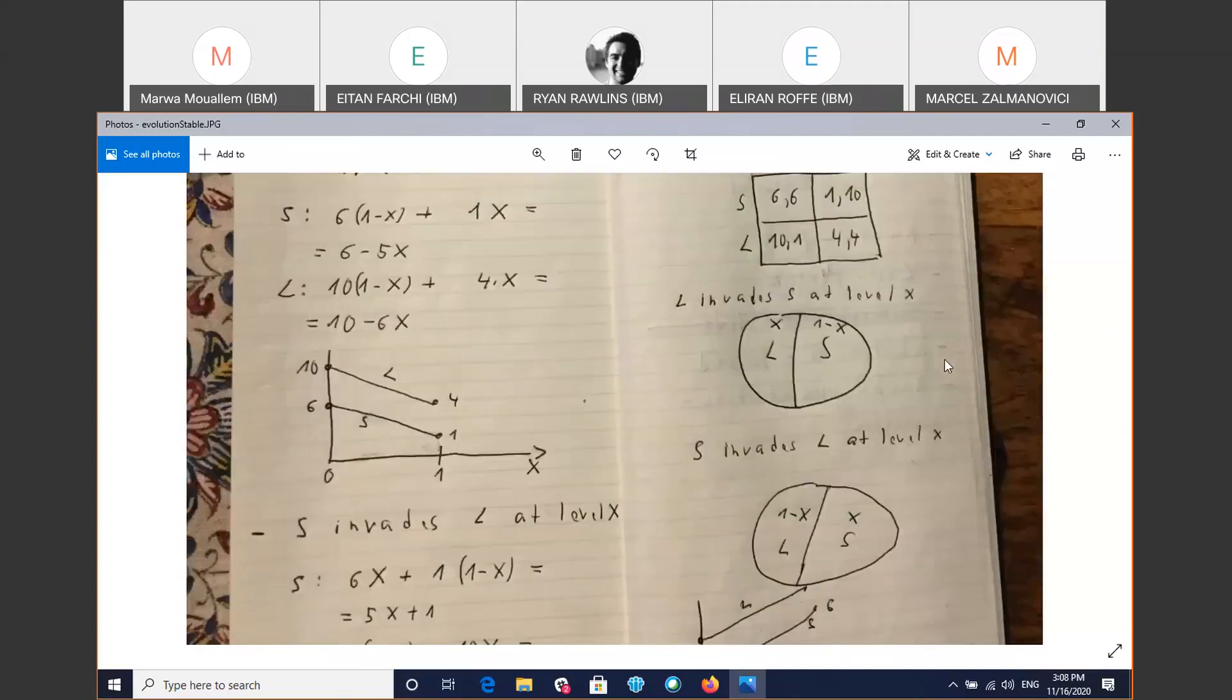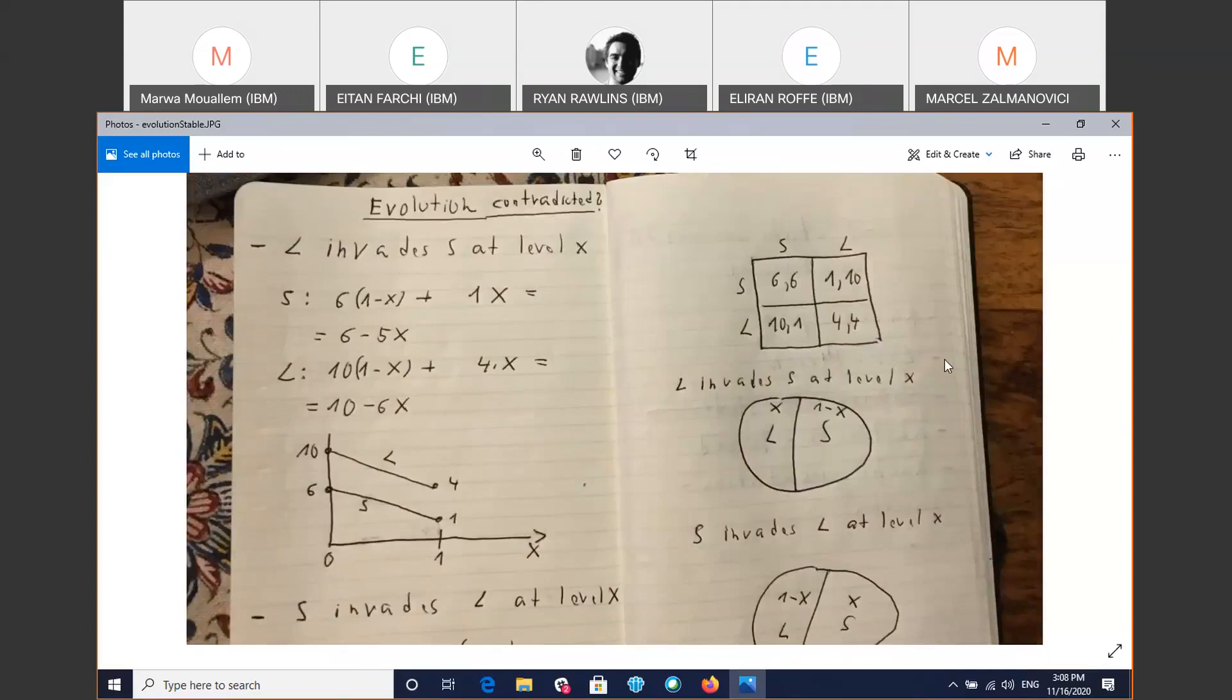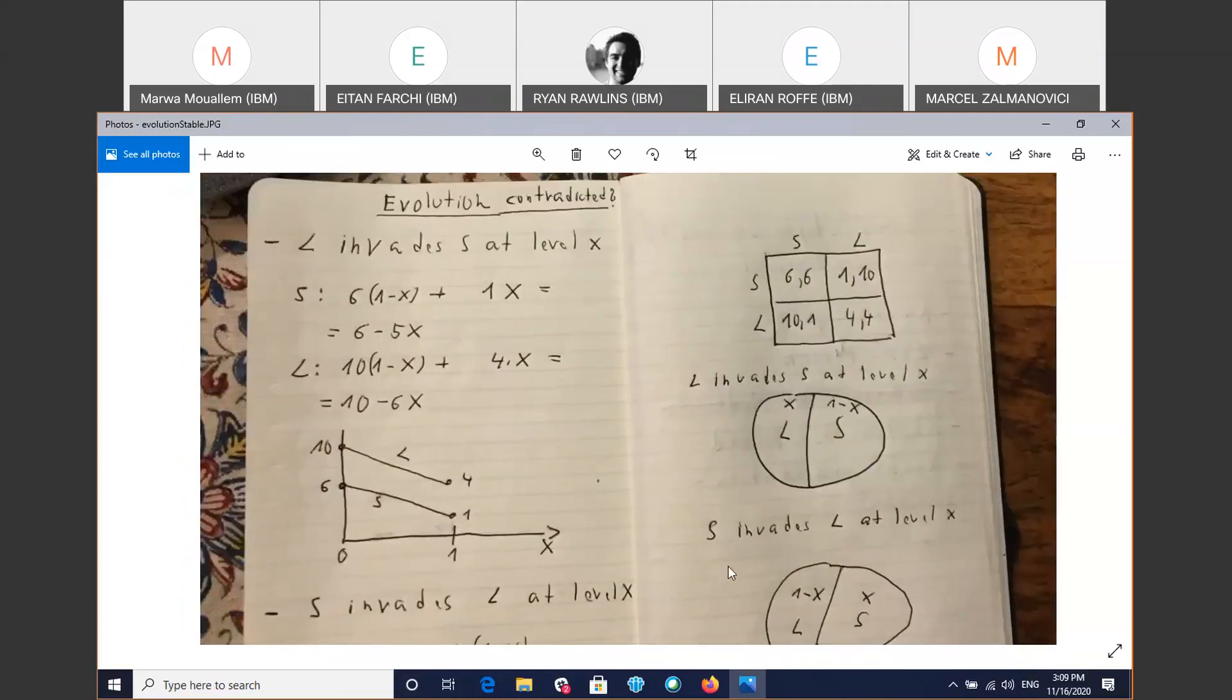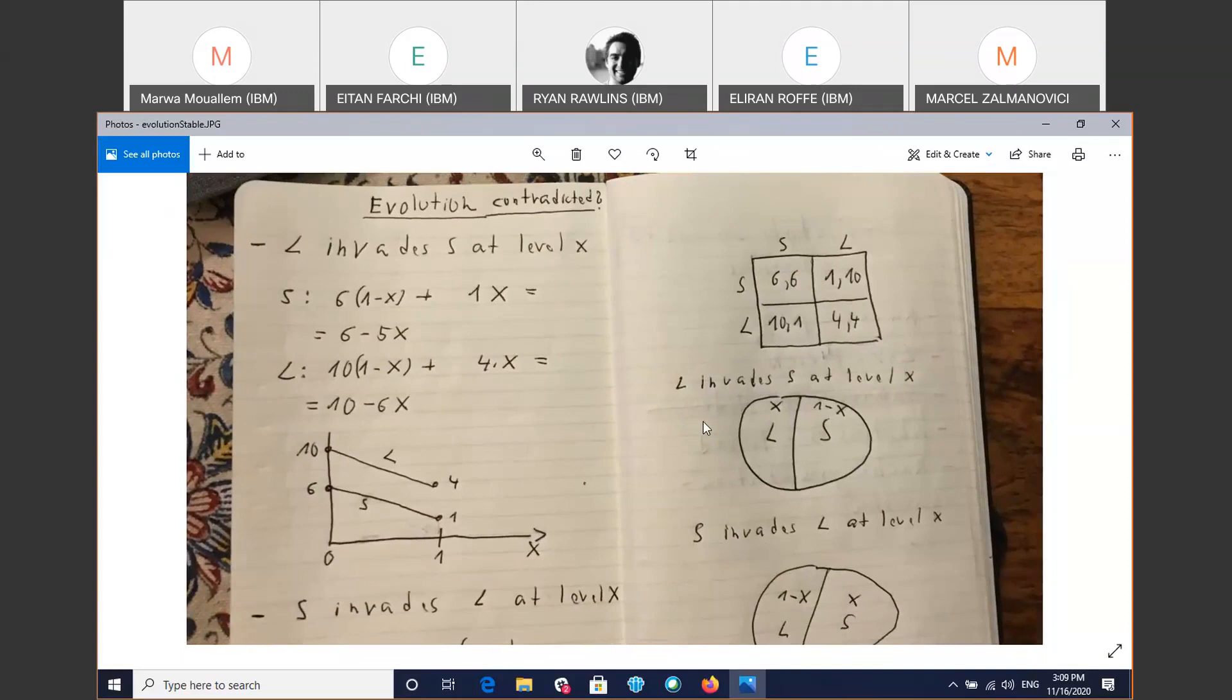And the question we want, we're going to ask ourselves is what happens when these other type of animals are introduced into the population. And we'll introduce the concept of invading. So we'll say that say the large animals invades the small animals at level X. We introduce X percentage of large animals into the population. Same, you know, the other way around, you know, S invades L. So basically we introduce X percentage of S into the population. Now the question, the stability question we're going to ask ourselves.